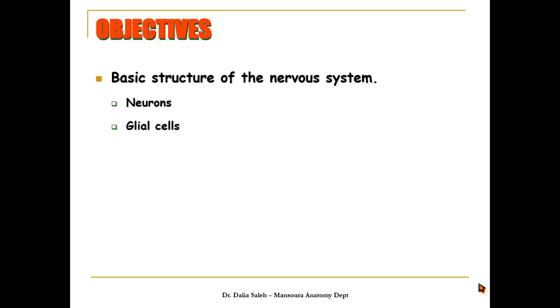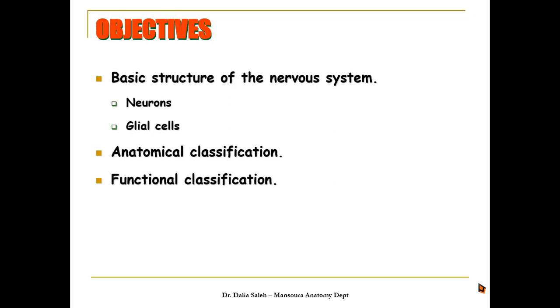To carry on with the general anatomy lectures, I'm going to discuss in this presentation the functional anatomy of the nervous system. I'm Dr. Dalia Saleh, professor and head of the anatomy department at Mansour University, Egypt. The objectives of my presentation are: first, I'm going to discuss the physical structure of the nervous system, which is formed mainly of two main cells — the neurons and the glial cells.